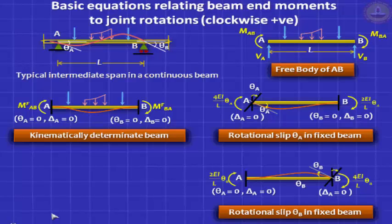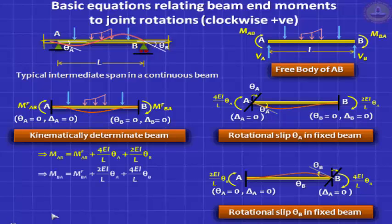Superposing restores the same deflected shape and the same rotations. In the first case theta A is 0, in the second case it is theta A, in the third case it is 0 — you add up everything and get theta A. The same is true for the right-hand side, giving theta B. The deflections are all zero at the supports, and obviously the forces must add up to satisfy equilibrium.